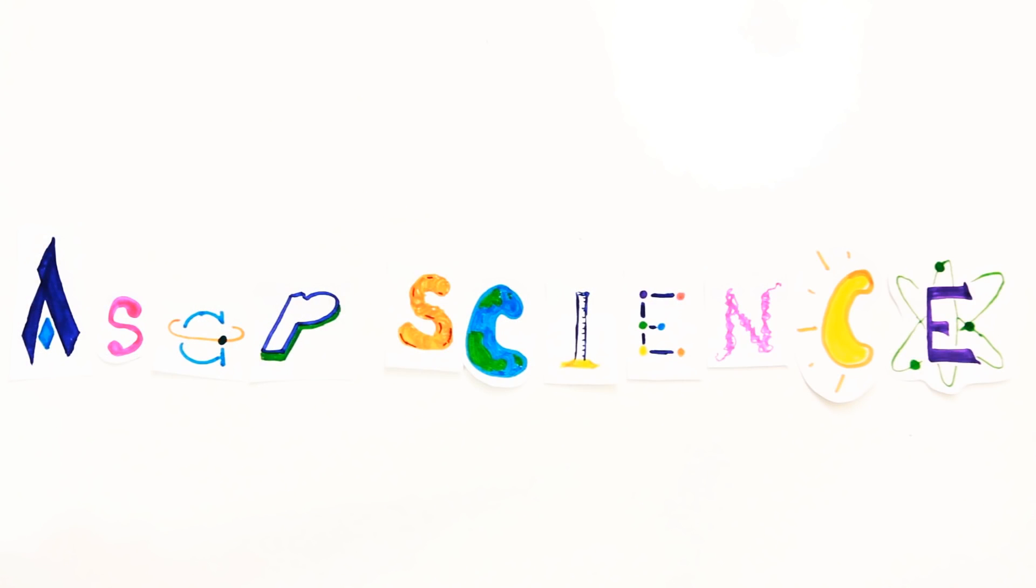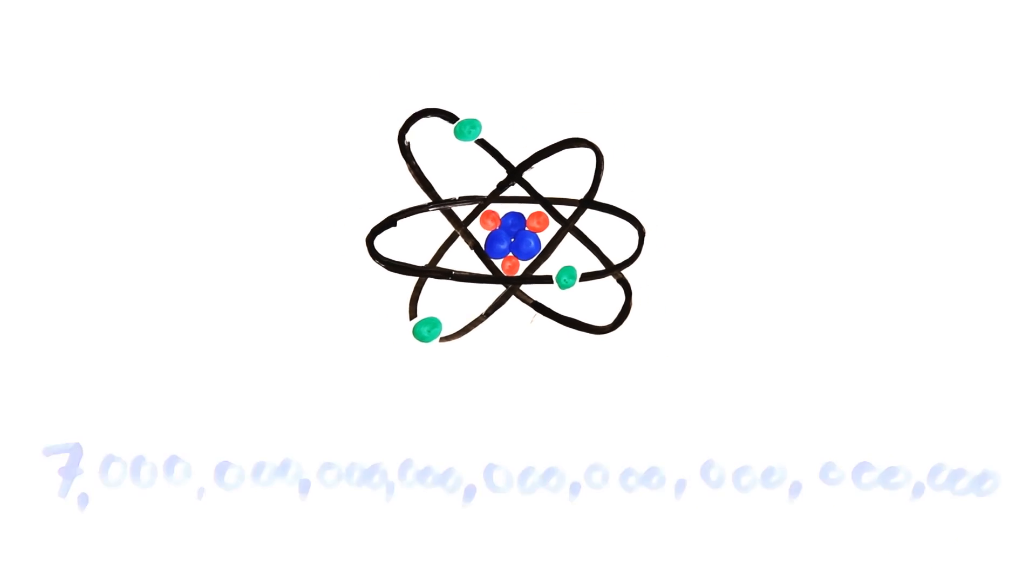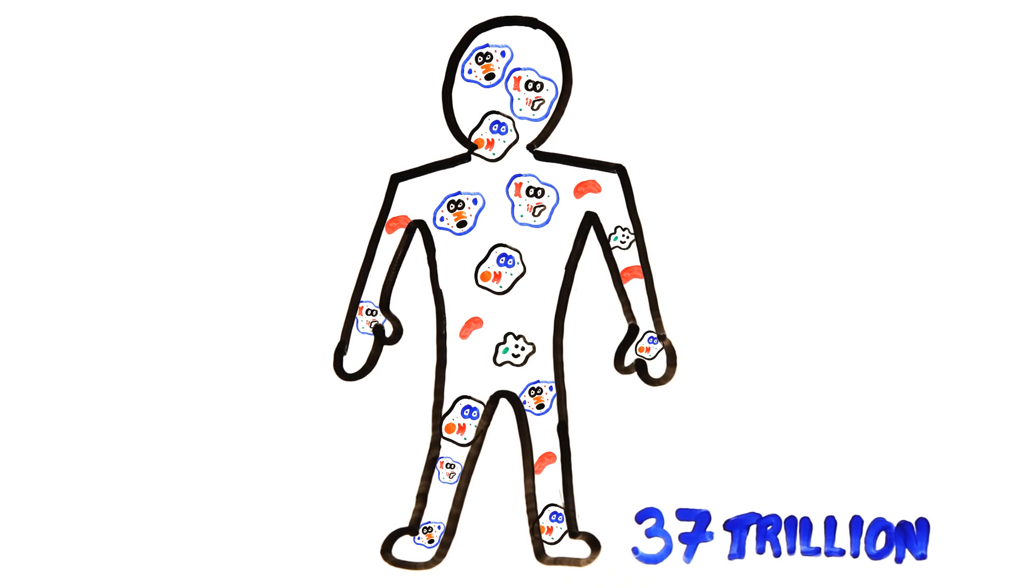Your body is made up of many atoms, around 7 octillion to be exact. These make up the 37 trillion cells in your body, which are actually much younger than you think.